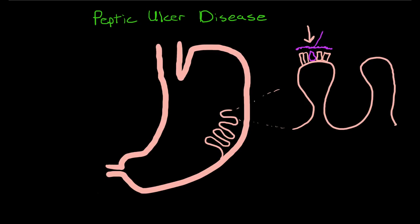This mucus has a few major components. Obviously it has water in it, but it also has a lot of mucin, as is typical of mucus. But then it has a special ingredient that's unique to the stomach, and that is gastric surfactant.